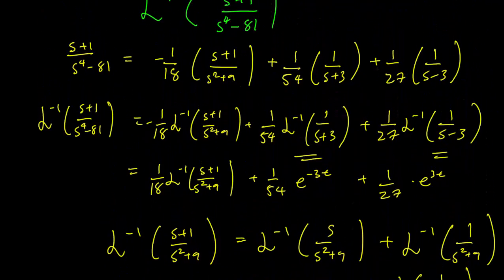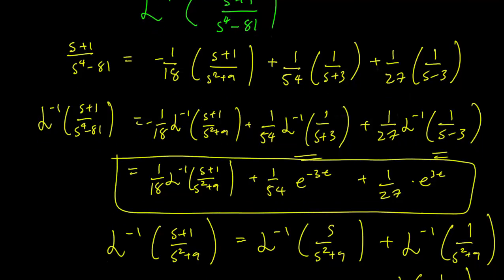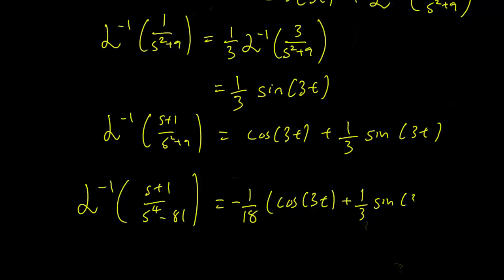And plugging that back in to our original equation, we get that the Laplace inverse transform of s plus 1 over s^4 minus 81 is just going to be minus 1 over 18 times cosine 3t plus 1 third sine 3t plus 1 over 54 e^(-3t) plus 1 over 27 e^(3t). Thank you.